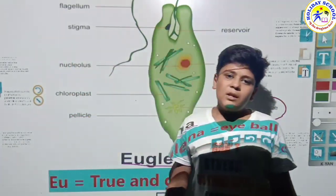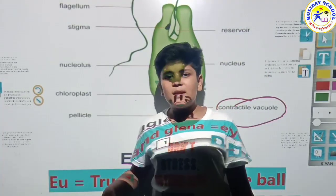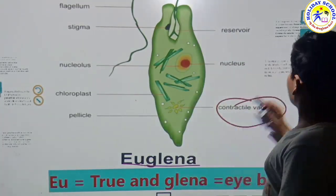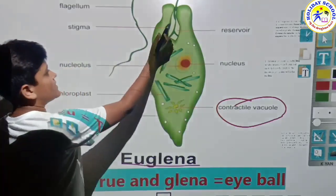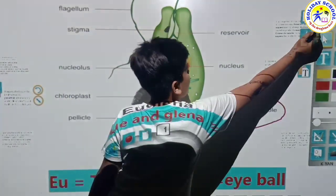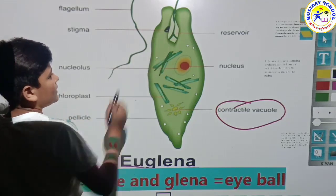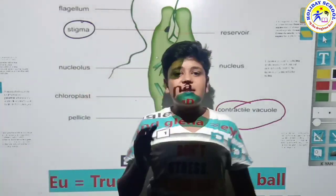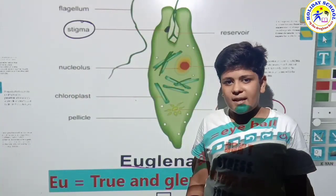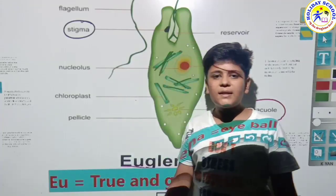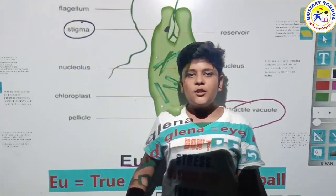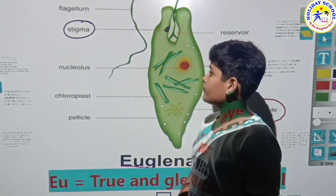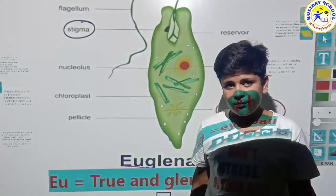You might have a question: how does Euglena know where the sunlight is? This black coloured substance you can see here is known as the stigma. The stigma is a part that attracts toward sunlight, so the Euglena knows where the sunlight is and where it is not.